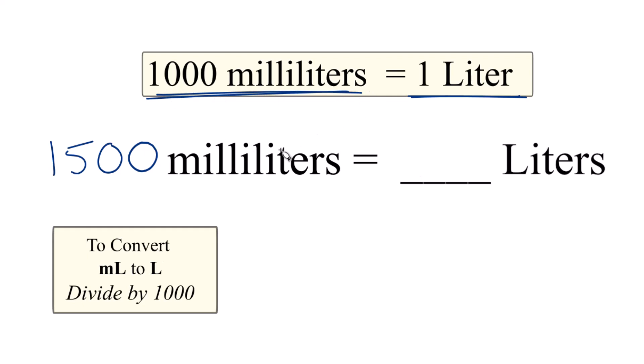Since we have more than 1000 milliliters, we're going to have more than one liter. So we have a whole number of liters - one point something, it looks like. To convert the milliliters to liters, we just take 1500 milliliters and divide by 1000.